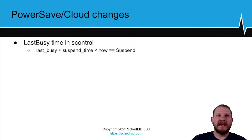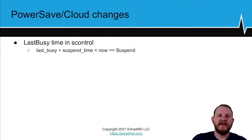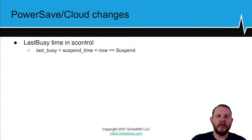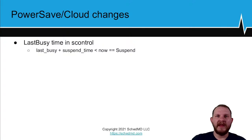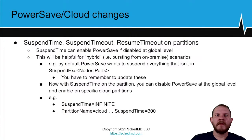A common question is: how do I know when my node will be powered down? We've added a 'LastBusy' field in scontrol that provides a timestamp of when the node last transitioned from allocated or mixed to idle or down. Using that timestamp and your configured SuspendTime, you can calculate exactly when the suspend program will execute — for example, if SuspendTime is five minutes and the node went idle four minutes ago, it will suspend in about one minute.